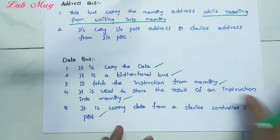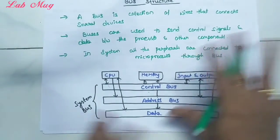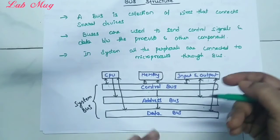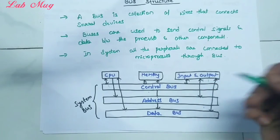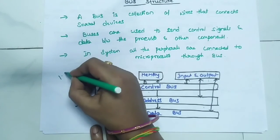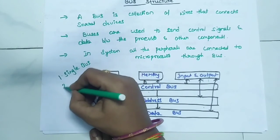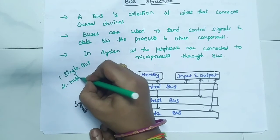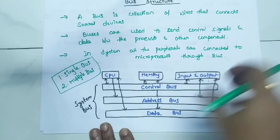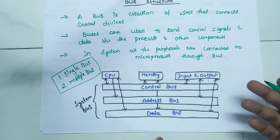That is the total about bus structure. When we look at bus structure, sometimes only one bus is used, sometimes three buses or two buses are used. So we divide into two types: single bus structure and multiple bus structure. These are the two types of bus structures. We will cover single bus structure and multiple bus structure in the next class. Thank you.